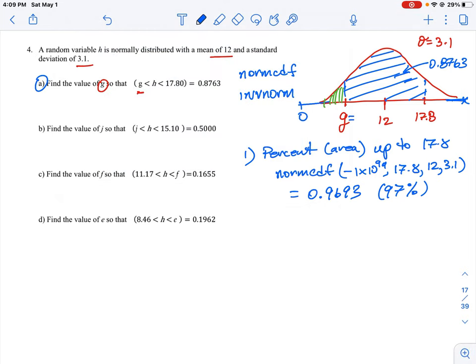So to do that, we just need to do a simple subtraction. So we know the whole area is... let me just make a little notation here. We're going to find the area up to g. So we need to calculate that percent or that probability. So we know the whole area is 0.9693.